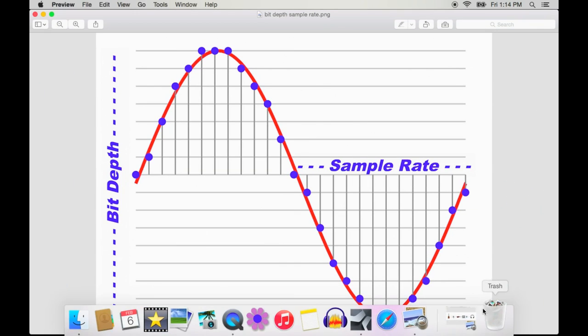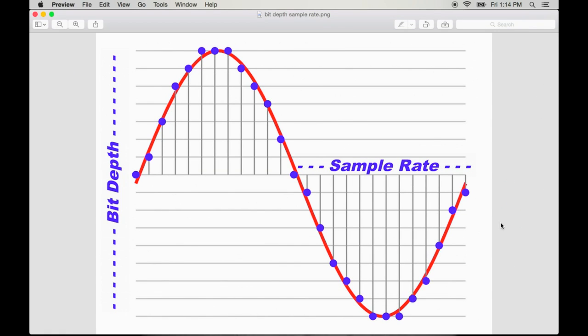Sound is naturally continuous analog information. So in order to store this wave of continuous information on a computer it needs to be converted to numbers that represent this information.